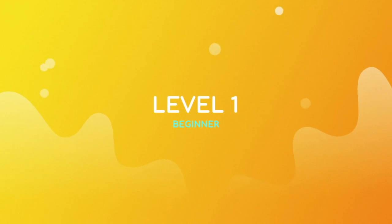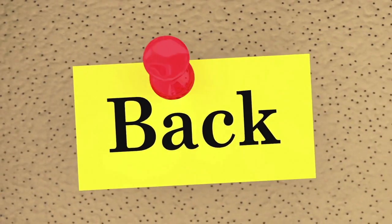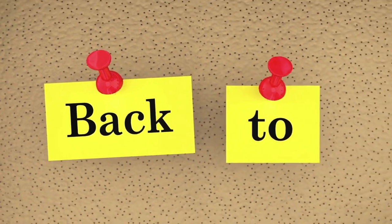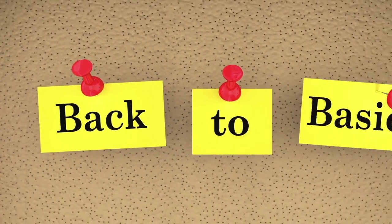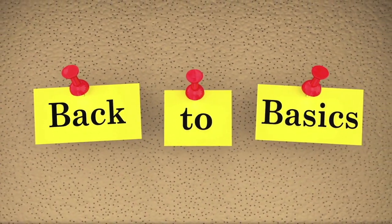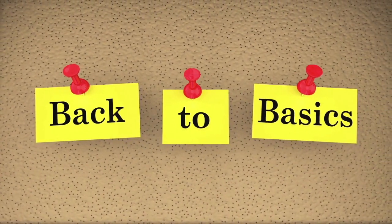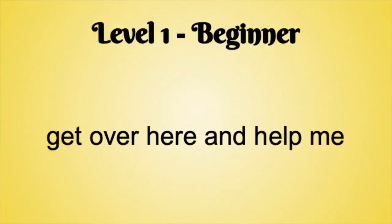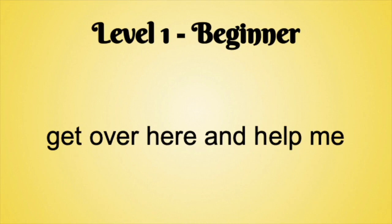Level 1: Beginner. At this level, it is important to know the basics. Here we will look at punctuation, capitalisation, vocabulary, and paragraphing using a simple example. For our example phrase, we will use 'get over here and help me.' When we look at punctuation, we introduce quotation marks.